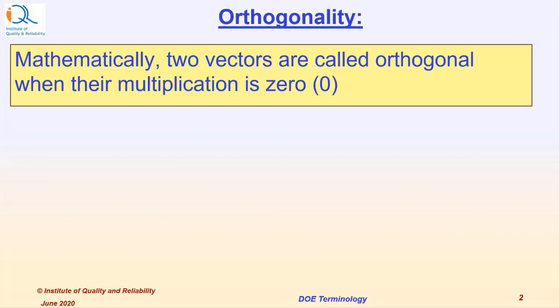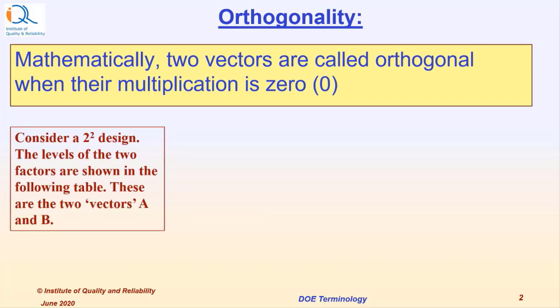Mathematically, two vectors are called orthogonal when their multiplication is zero.